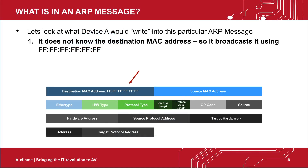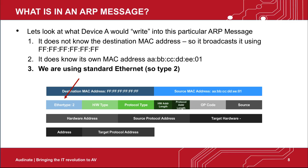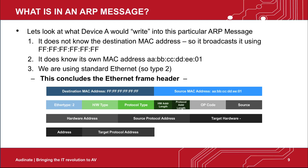So what exactly is an ARP message? Let's look at what device A would write into this particular ARP message. The device does not know the destination MAC address, so it broadcasts to the broadcast MAC address, which is FF in all octets. But it does know its own MAC address — in this case, AA:BB:CC:DD:EE:01. We're using standard Ethernet, so the type will be 2. This concludes the Ethernet frame header.